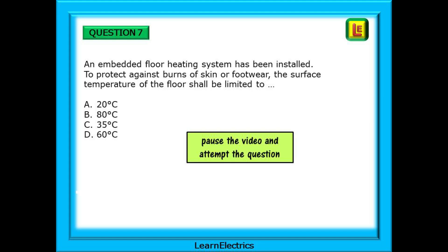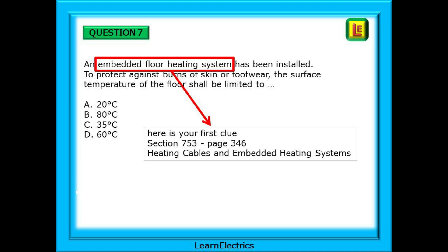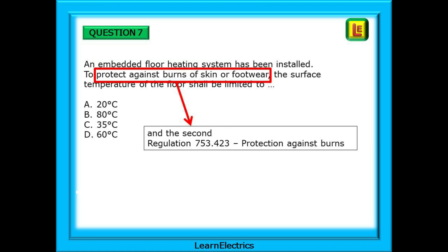Question 7 is next: An embedded floor heating system has been installed. To protect against burns of skin or footwear the surface temperature of the floor shall be limited to... and 4 possible answers. Here is the first clue from the question: Embedded floor heating system. Page 3 main contents will show this to be section 753 and it directs you to page 346. Your second clue is the phrase 'Protect against burns of skin and footwear.' Regulation 753.423 says Protection against burns and there is your answer.